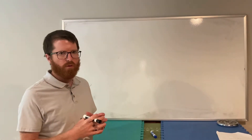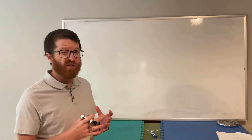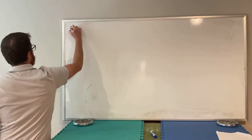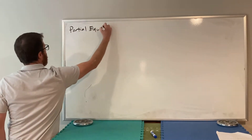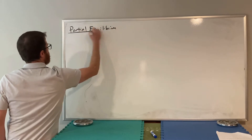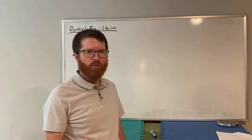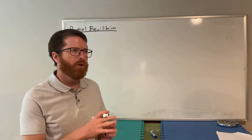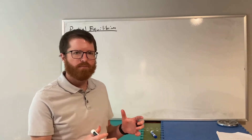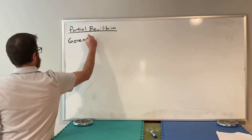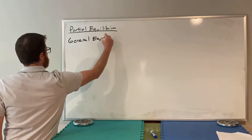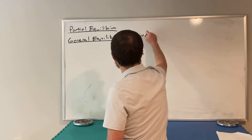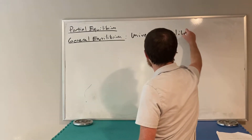It's time to start connecting markets more thoroughly. In this section, we're thinking about how markets are all coordinated. So far we've generally dealt with the concept of partial equilibrium, which basically just thinks about individual markets and how they work. What we're doing now is general equilibrium, which thinks about universal equilibrium and the connection of markets.